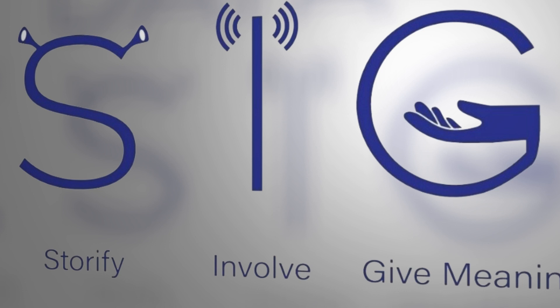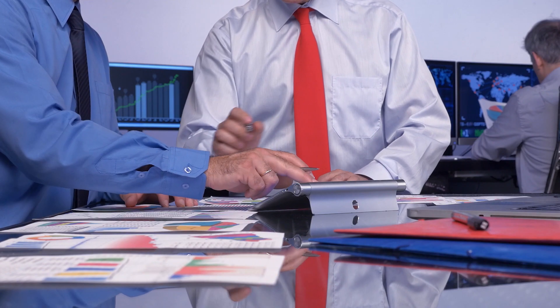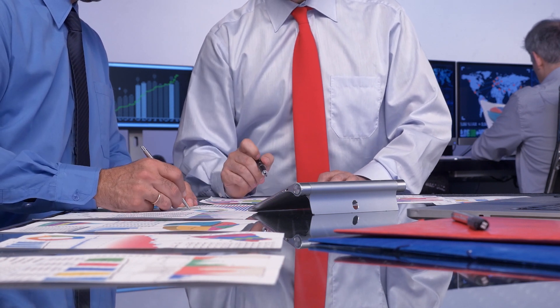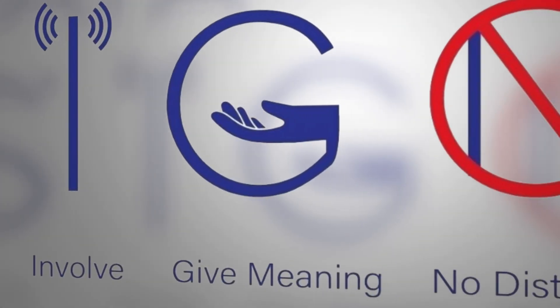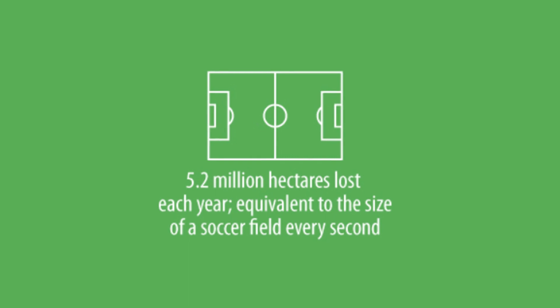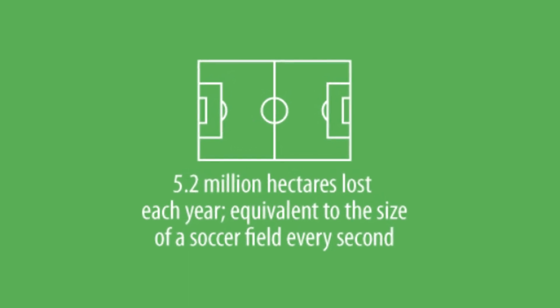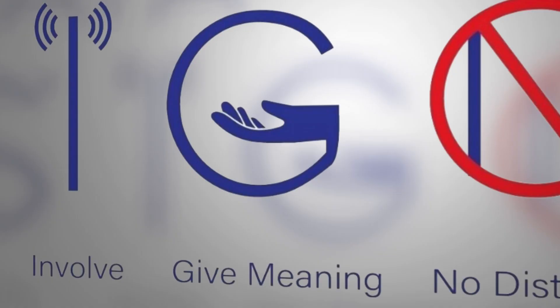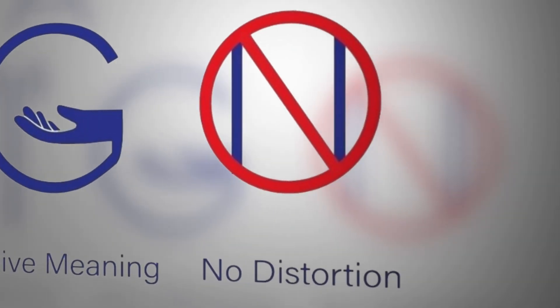The I stands for involvement. People get data better when you involve them in the interpretation process — ask them questions about it. The G stands for giving meaning: use comparisons, make it concrete through examples, and compare data over time. The N stands for no-goes — no distortion. For example, avoid pie charts and instead use bar charts.